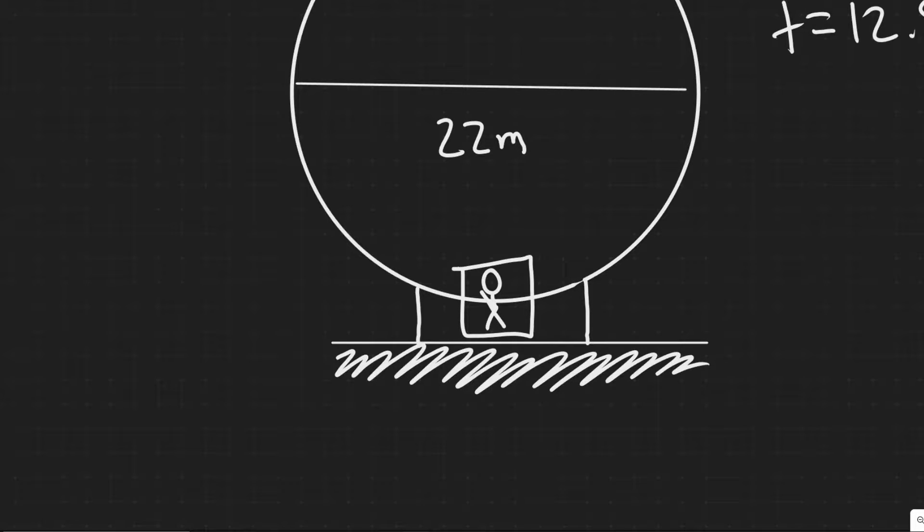So in this problem, we're told a Ferris wheel 22 meters in diameter rotates once every 12.5 seconds. What is the ratio of a person's apparent weight to her real weight, A at the top and B at the bottom?